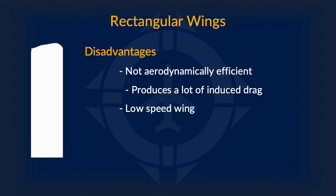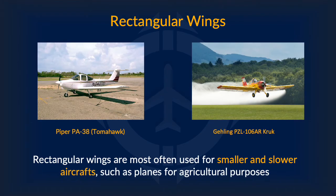Now these advantages may seem pretty amazing, so why not just use rectangular wings all the time? The problem is that rectangular wings also come with some very severe disadvantages, chief among which is that they are not aerodynamically efficient at all. In particular, they create a lot of induced drag. Coupled with this, it is a low-speed wing and shouldn't be used if speed is desired. As such, rectangular wings are used mostly for smaller and slower aircrafts, such as the famous Piper PA-38, and also for planes used in agricultural purposes.